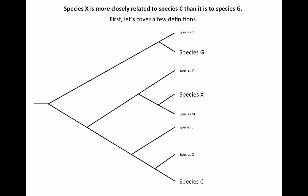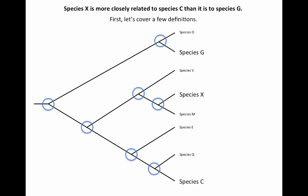First let's remember a few definitions associated with evolutionary trees. These species along the right side of the evolutionary tree are called taxa. Species O, V, M, E, and Q are all taxa as well. One taxa is called a taxon. These intersection points on the evolutionary tree are called nodes, and a node represents an ancestor. For example, this node right here represents the ancestor of species X and species M.